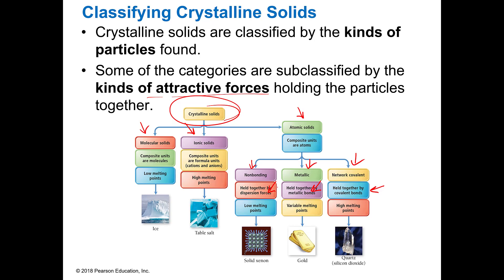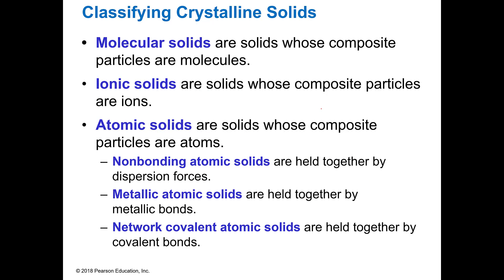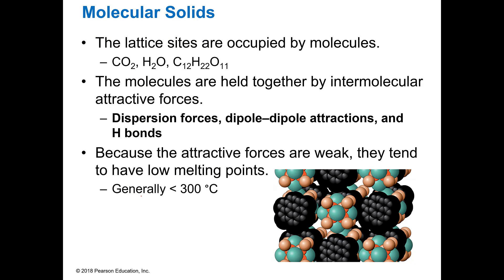Things like quartz and amethyst and all those other cool things. Our primary types are the top three: molecular, ionic, or atomic. You should be able to figure those out pretty easily because molecules make up molecular solids, ions make up ionic solids, and atoms — that is just a single atom of something — make up the atomic solids. Then I gave you the subcategories depending on what they are and what they're held together by.